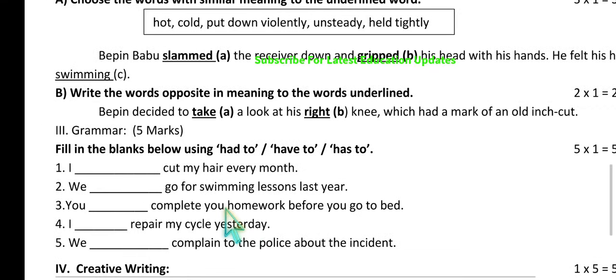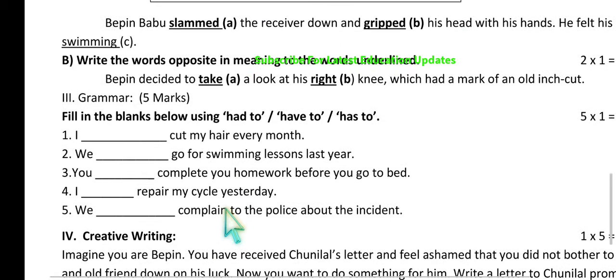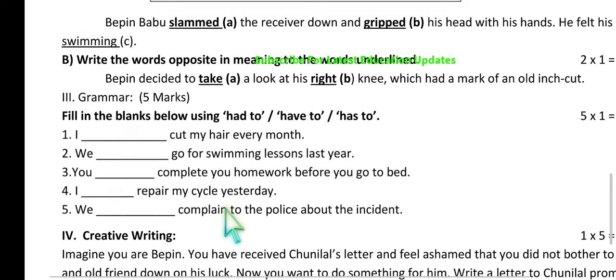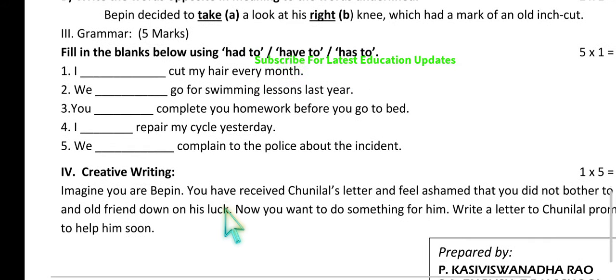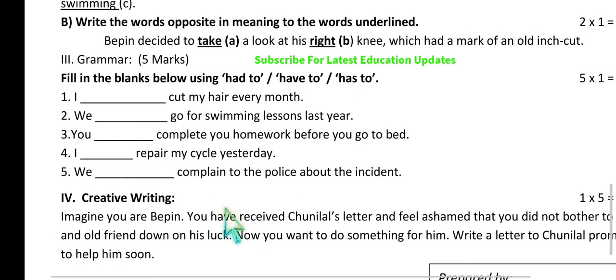This is the working with language section, directly taken from the textbook — using 'had to,' 'have to,' and 'has to.' For example: 'I have to cut my hair every month' and 'We had to go for swimming lessons last year.' These are very easy — please complete the exercises.